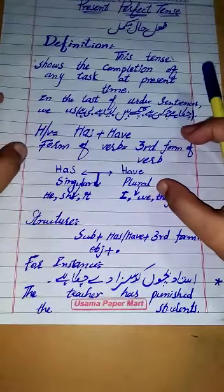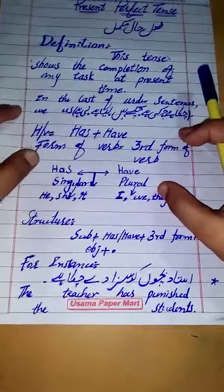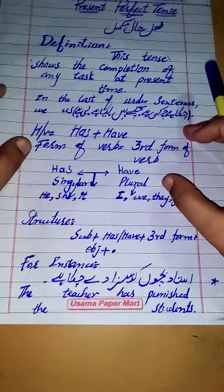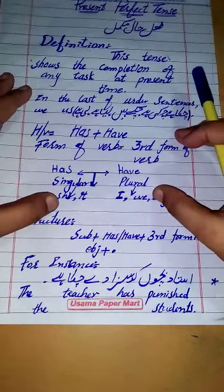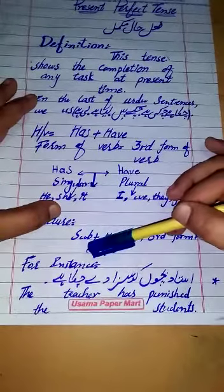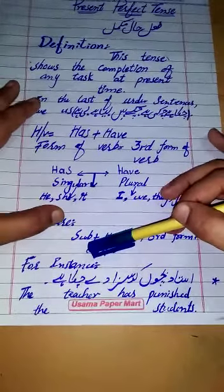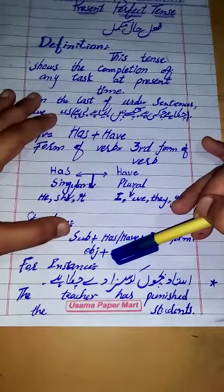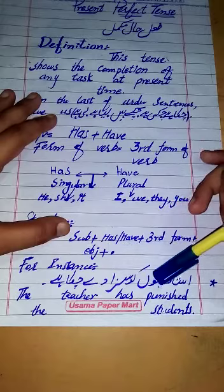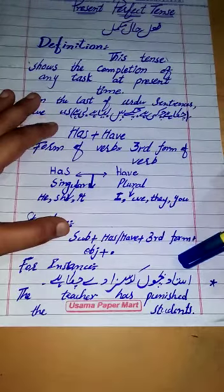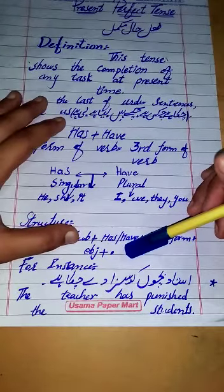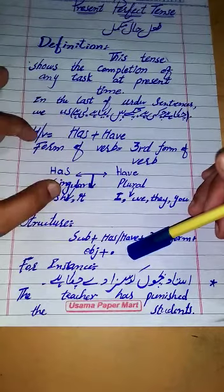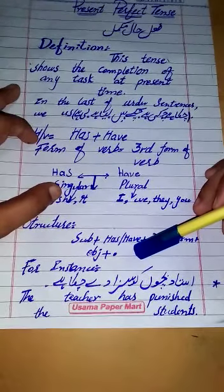Now let's look at the structure. The structure is the same in every tense — only the helping verb and verb form change. First, we use the subject, then 'has' or 'have,' then the third form of the verb, then the object, and finally a full stop.